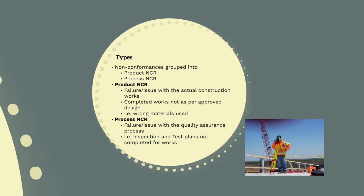You can have a combination of product and process NCRs. For example, if you were completing a concrete pour and the ITP specified that concrete testing was required, but concrete testing was not completed, this would be a process NCR — but potentially also a product NCR, as the supplied concrete may not comply with the design requirements.